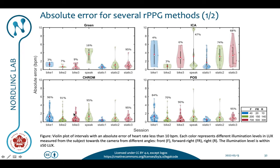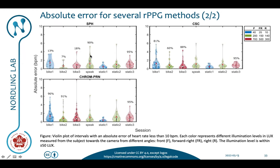Since the error violins are overlapping it's not statistically significant, but we have a small tendency toward it. Another method that performed reasonably well is POS. We also have the CSC method that performs well and the ChromePRNet method. Depending on the test, a different method is actually performing best.